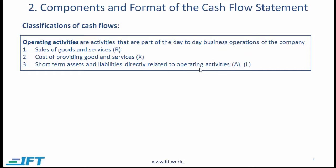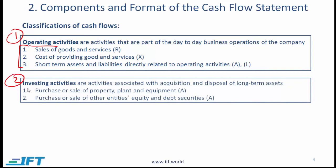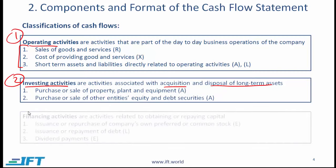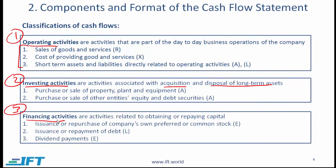Coming now to the components and format of the cash flow statement. The cash flow statement has three parts. The first part shows cash flows related to operating activities — activities that are part of the day-to-day business operation of the company. The second part is investing activities, which are activities associated with acquisition and disposal of long-term assets. The third part is financing activities — activities related to obtaining or repaying capital.